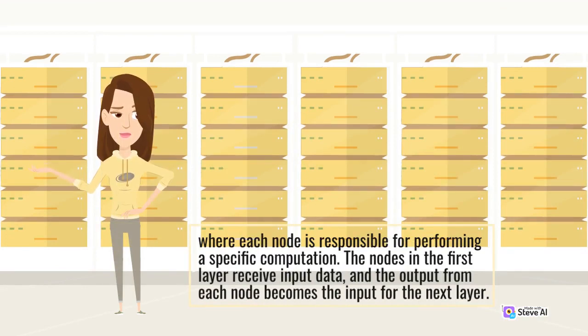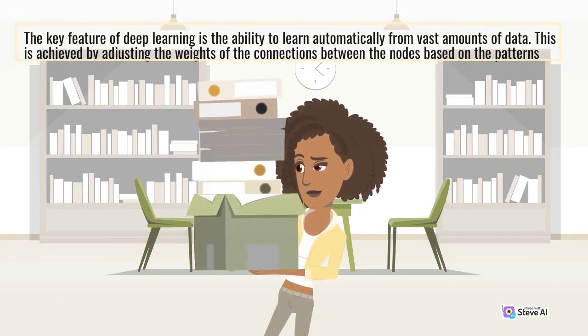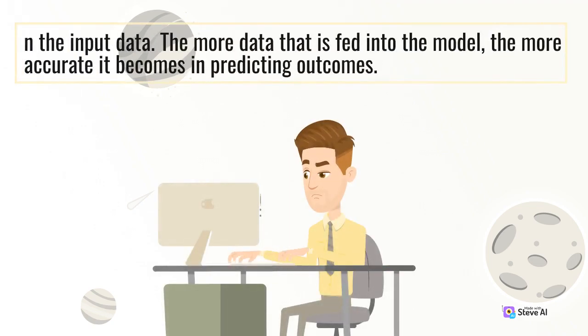The key feature of Deep Learning is the ability to learn automatically from vast amounts of data. This is achieved by adjusting the weights of the connections between the nodes based on the patterns in the input data. The more data that is fed into the model, the more accurate it becomes in predicting outcomes.